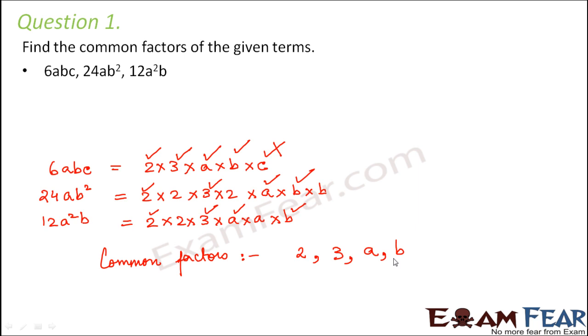Now make sure that whenever you are trying to find out common factors of 3 terms, the common factor is that one which is present in all the 3 of them. For example, if you look at b. So okay. So b, only one b is present in all of them. Now let's say if two b's were present in all of them, in that case b² would have been a common factor for all of them. Right?